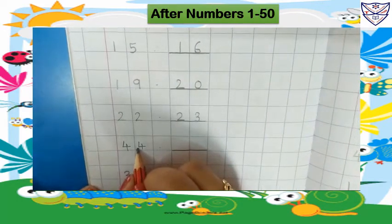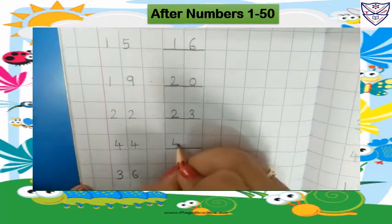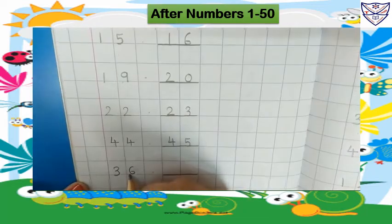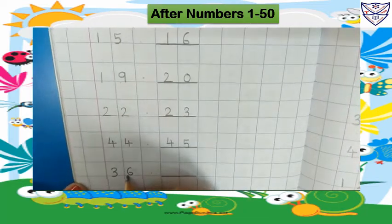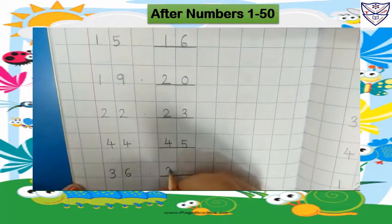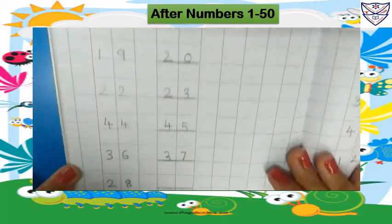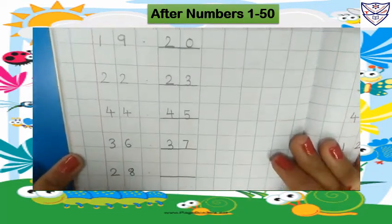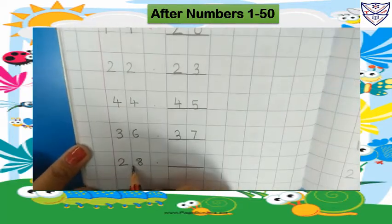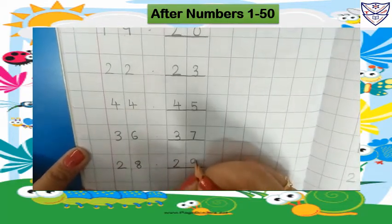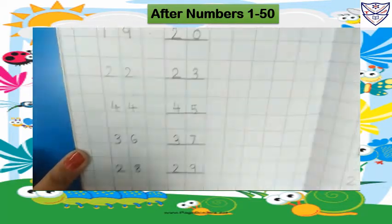What will come after 44? 45. So we will write here 45. What will come after 36? 37. So we will write 37. What will come after 28? 29. So we will write here 29.